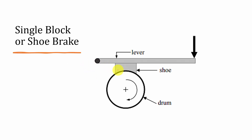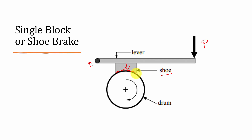So first of all, this is a single block or shoe brake, so it has a lever and a shoe fixed on it. If it has only one shoe then it is called a single shoe brake; if it has two then it is called a double shoe brake. The drum is rotating and when we want to apply the brake, a force P is applied at the end of the lever, which is pivoted at the opposite end. When the shoe is forced against the rotation of the drum, it applies a braking force, and because of the friction between the brake shoe and the drum the brake is applied.